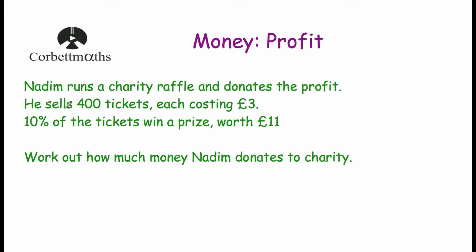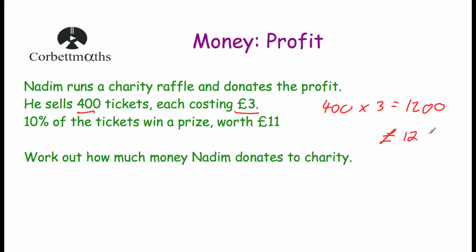First of all, let's work out how much money Nadeem earned altogether from selling the tickets. He sold 400 tickets, each costing £3. So if we multiply 400 by 3, we'll see how much money he made. Well, 4 times 3 is 12, so 400 times 3 will be £1,200. So he makes £1,200 from selling the tickets.